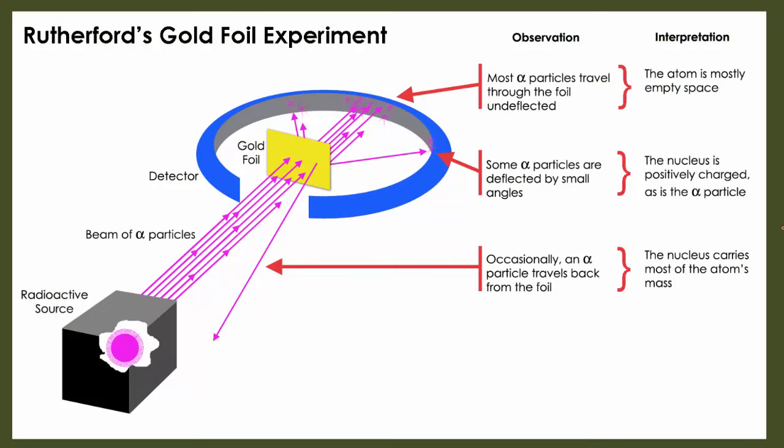In his gold foil experiment, Ernest Rutherford took a radioactive source, which we see in the bottom left-hand side, and he basically used that radiation to penetrate a very, very thin sheet of gold foil. In the process, he noticed on his detector that some of those alpha particles from the radiation source were then deflected, and they did not go perfectly straight through.